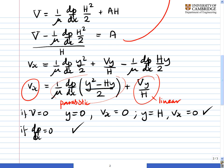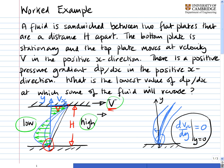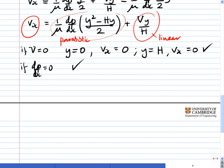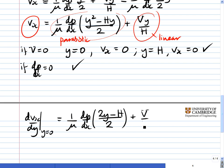Let's scroll back up. Remember what the question was asking us. We're being asked to find the relationship between dp/dx, V, and H which gives dVx/dy at y equals zero equal to zero. We have an expression for Vx as a function of y. We want dVx/dy at y equal to zero. So dVx/dy is 1/μ dp/dx (2y - H)/2 plus V/H.